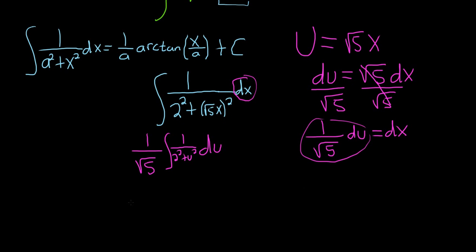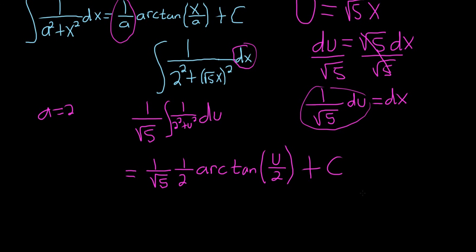Now we use the formula. So it's 1 over root 5 that hangs out. So a here is 2 in the formula. So it's 1 over a, so 1 over 2. And then arctangent of u over 2 plus our capital C.